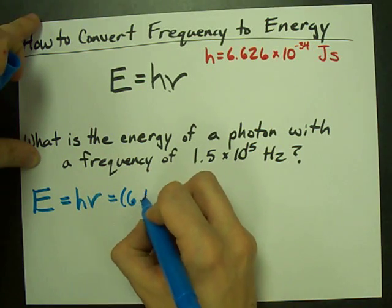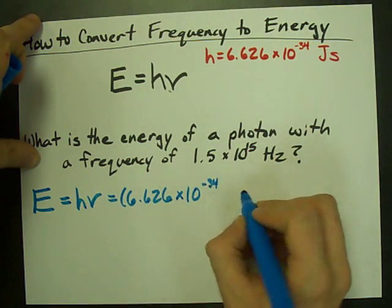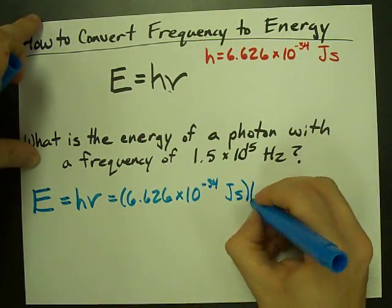That is 6.626 times 10 to the power of negative 34 times the frequency. Oh well, that's easy.